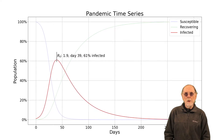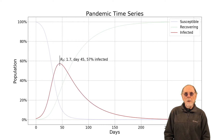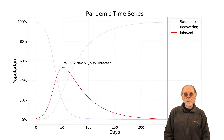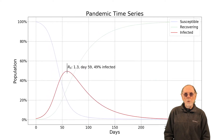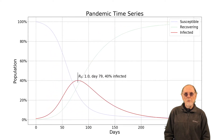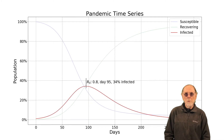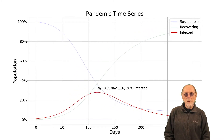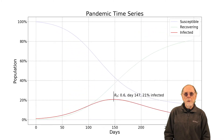Simply stated, a high peak infected population would overwhelm the medical system and leave seriously sick people without care. The remedy is to reduce R sub zero, the infection rate.